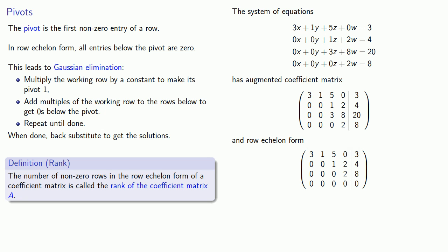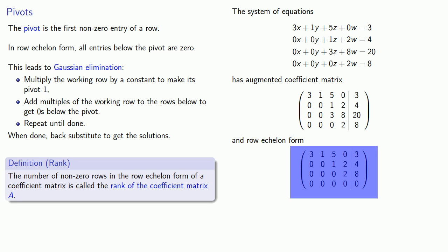In this case we have 3 non-zero rows, so this matrix has rank 3. It's worth emphasizing that while we determine the rank based on the row echelon form of the matrix, the rank also applies to the original augmented coefficient matrix. So both this row echelon matrix and the original augmented coefficient matrix that produced it have rank 3.